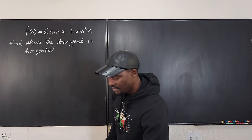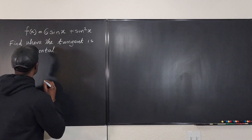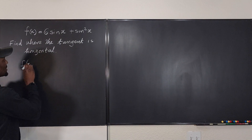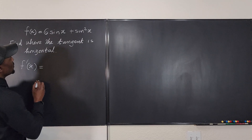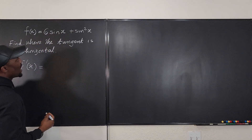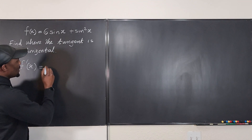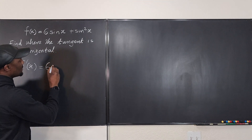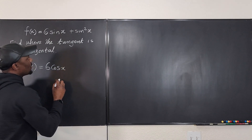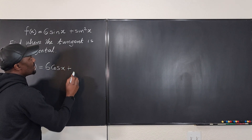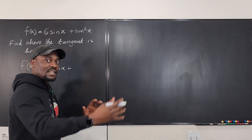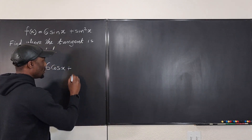So let's take the derivative of this function. Let's do f prime of x. f prime of x will be equal to: if we take the derivative of six sine x, we're going to get the six stays and the derivative of sine x is cosine x. Plus if we take the derivative of sine squared x, we have to treat it as if it is sine x squared, so we apply the chain rule.